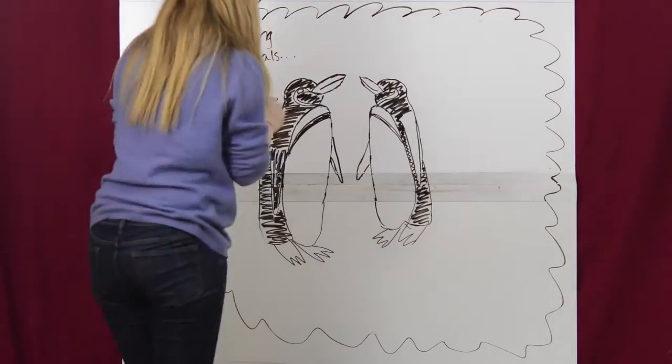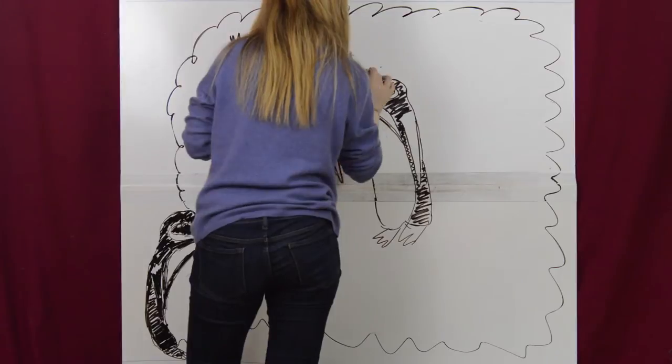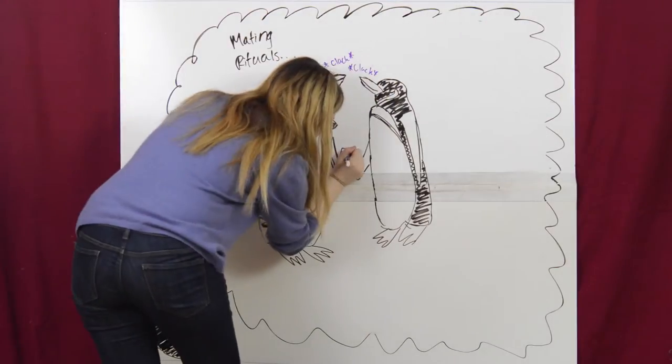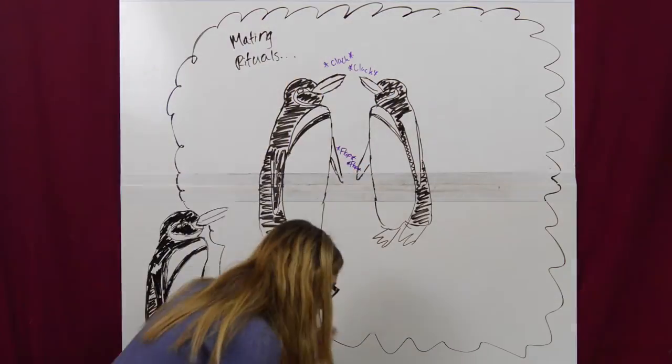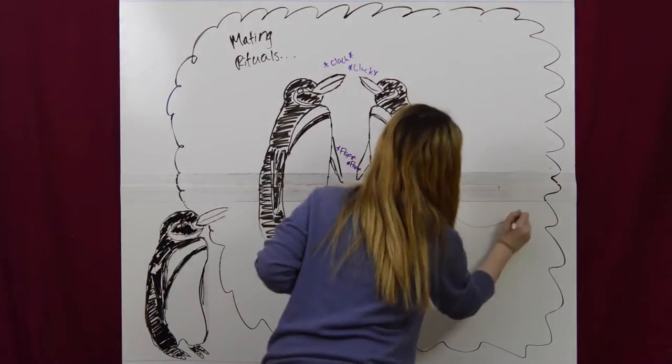After finding a mate, each penguin pair builds a nest that is continuously renovated until eggs are laid. When complex courtship and initial nest building are complete, the penguins begin mating.